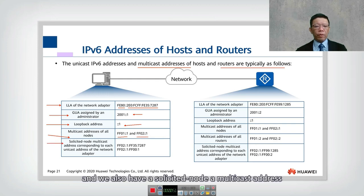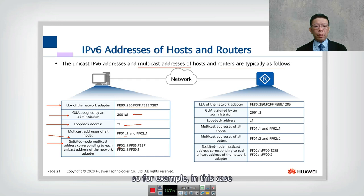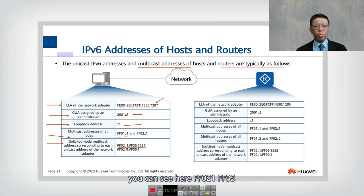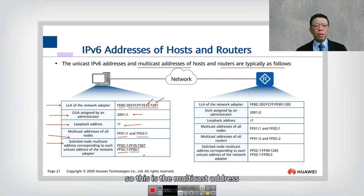We also have a solicited-node multicast address corresponding to each unicast address on the network. For example, the last 24 bits map to addresses like ff02::1:ff35 and ff02::1:ff00:fff1. This solicited-node multicast address is key to IPv6 neighbor discovery operations.